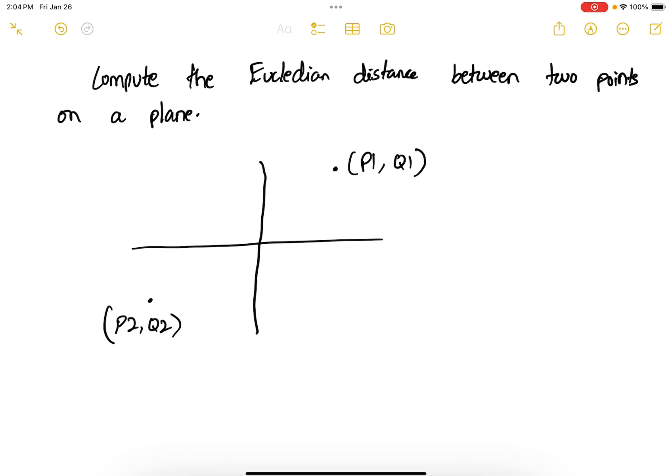For simplicity, I am going to assume p1 and q1, p2 and q2 as integers and you are asked to find the straight line distance or the Euclidean distance between these two points.